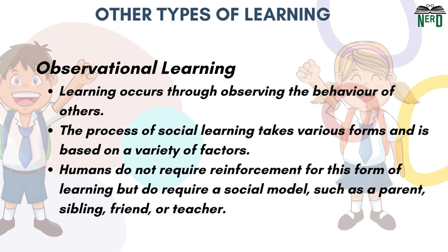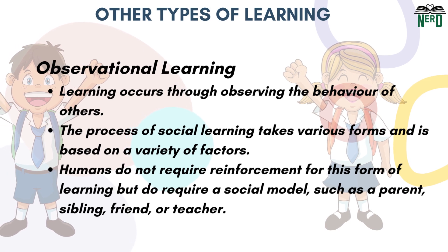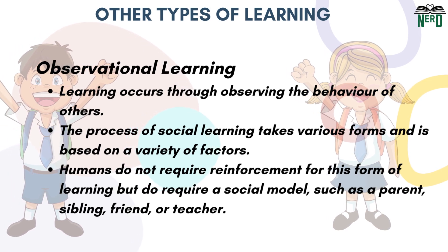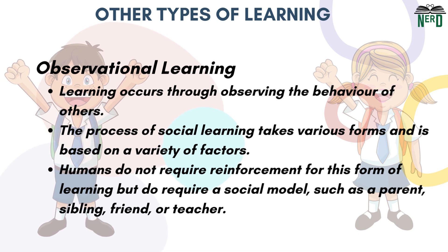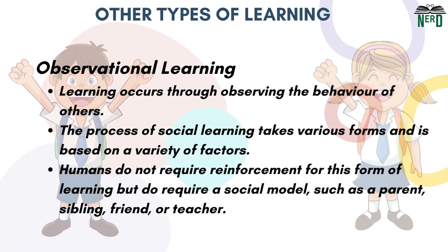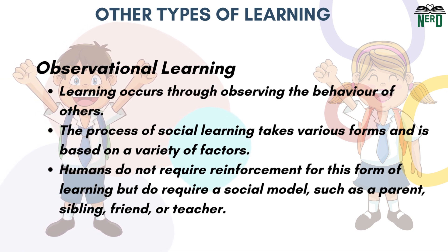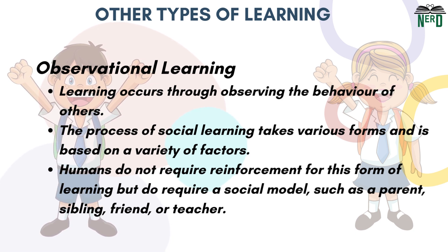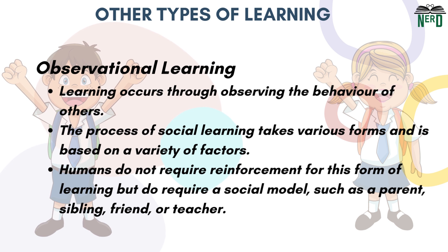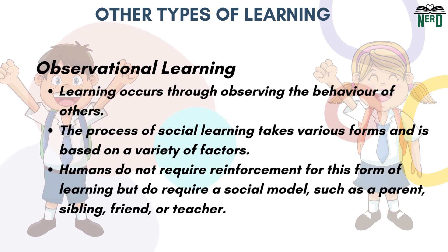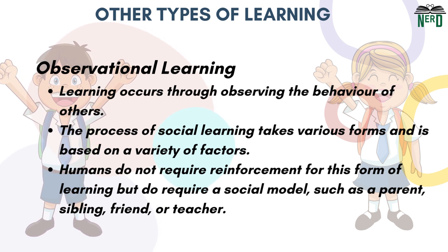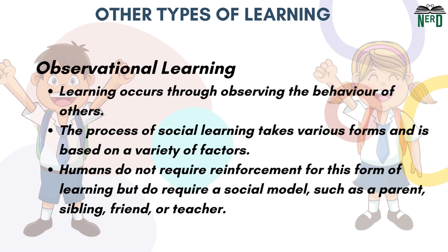The first type of learning is observational learning. It is learning that occurs through observing the behavior of others. The process of social learning takes various forms and is based on a variety of factors. Humans do not require reinforcement for this form of learning but do require a social model, such as a parent, sibling, friend, or teacher.